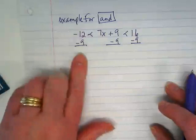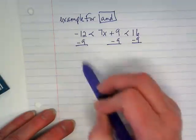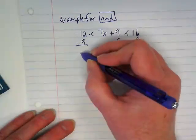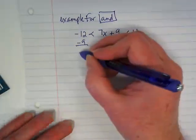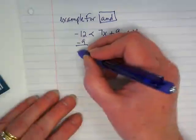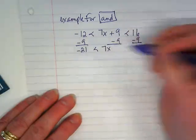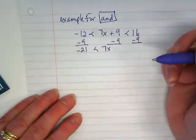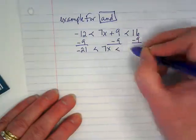You go with the like terms. Negative 12 minus 9 is negative 21. I know you're thinking 12 minus 9, but no, we're combining them. Negative 21 less than 7x, which makes sense. We've got a 7 and a 21, don't we? 16 minus 9 is going to be 7.